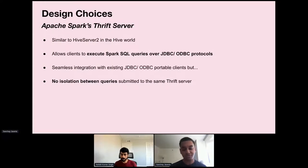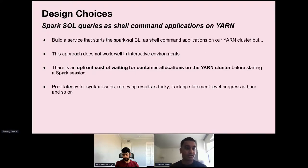We had a few different design choices that we considered while architecting a solution. The first one was to use Spark's Thrift Server. Spark's Thrift Server is similar to HiveServer2 in the Hive world, wherein you can run SQL queries over JDBC and ODBC protocols. The benefit here is that it allows clients that execute Spark SQL queries over these protocols to seamlessly integrate with the Spark Thrift Server. But there is no isolation between queries that are being submitted to the same Thrift Server. Having used HiveServer2 in the past, we knew that this would be a big problem where a bad query could potentially bring down the entire server, resulting in killing or even failures of concurrently running queries. So we decided not to go forward with this approach.